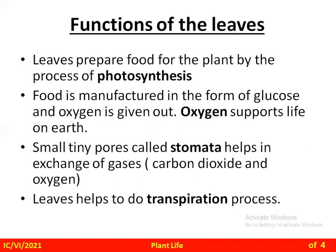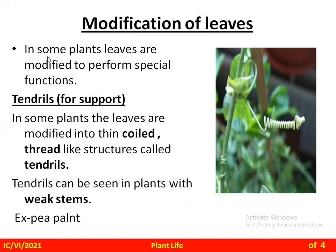Next is the modification of leaves. In some plants, leaves are modified to perform special functions. You can see in the picture this modification — it does not look like a typical leaf. This modification is called tendrils. In some plants the leaves are modified into thin thread-like structures called tendrils, which look coil-like. Tendrils are found in plants with a weak stem and they help to support the plant. This type of leaf is seen in the pea plant.